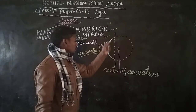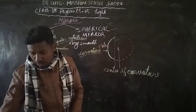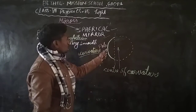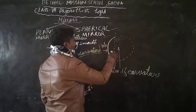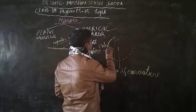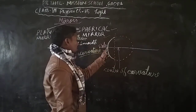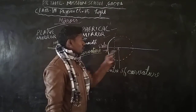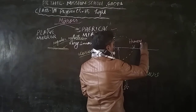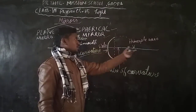Pole is the geometric center of the curvature. Now you have two points — the pole and the center of curvature. The line joining these two points — the center of curvature and the pole — is called the principal axis.